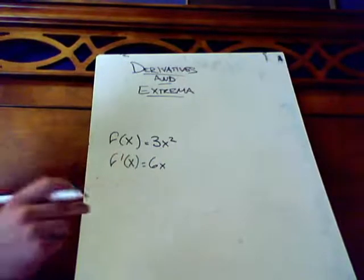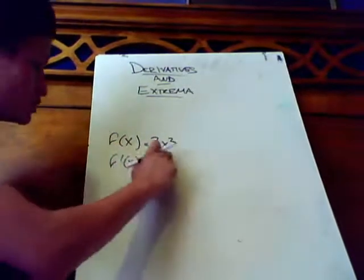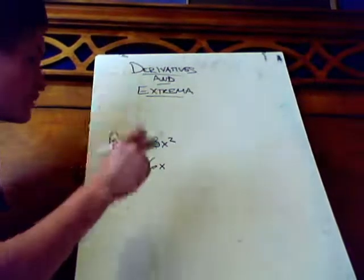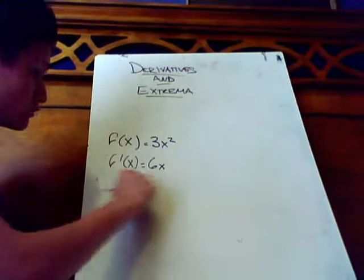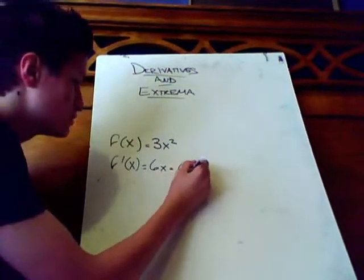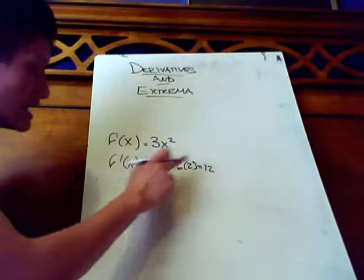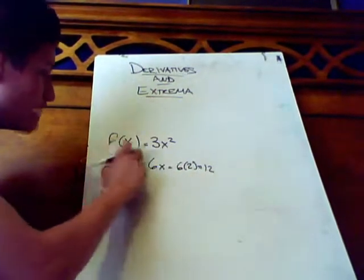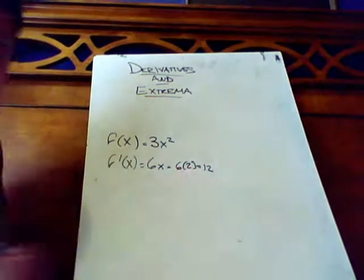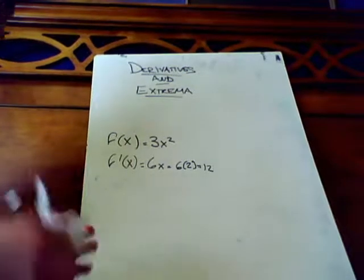That means at any x point, let's say we want to find the slope of the tangent line for this function at 2. That means we plug in 2 into the derivative and we get 12. 6 times 2 is 12. That means the slope of the tangent line at x equals 2 of f of x is equal to 12. Alright, I think we got that out of the way.